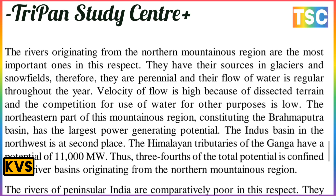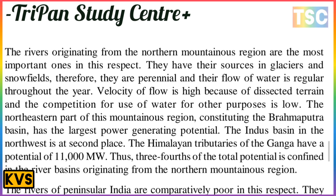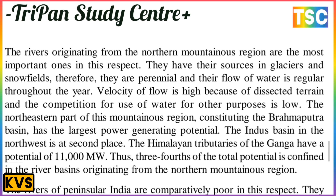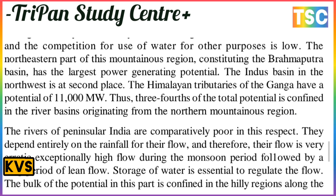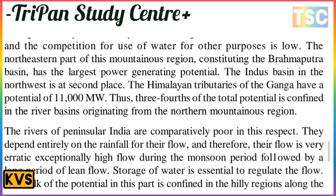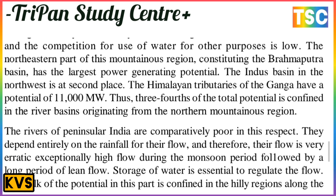The Brahmaputra basin has the largest power generating potential, and the Indus basin in the north is at second place. The Himalayan tributaries and the Ganga have a potential of 11,000 megawatt. Three-fourths of the total potential is confined in river basins originating from the northern mountainous region. The rivers of Peninsular India are comparatively poor in this respect and depend entirely on rainfall, making their flow erratic with exceptionally high flow during the monsoon followed by a long period of low flow.